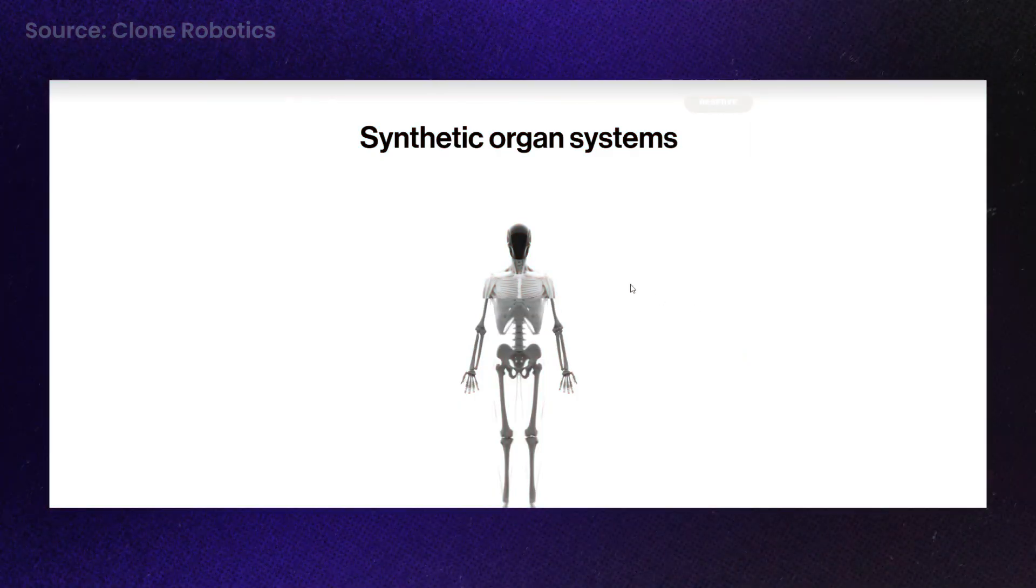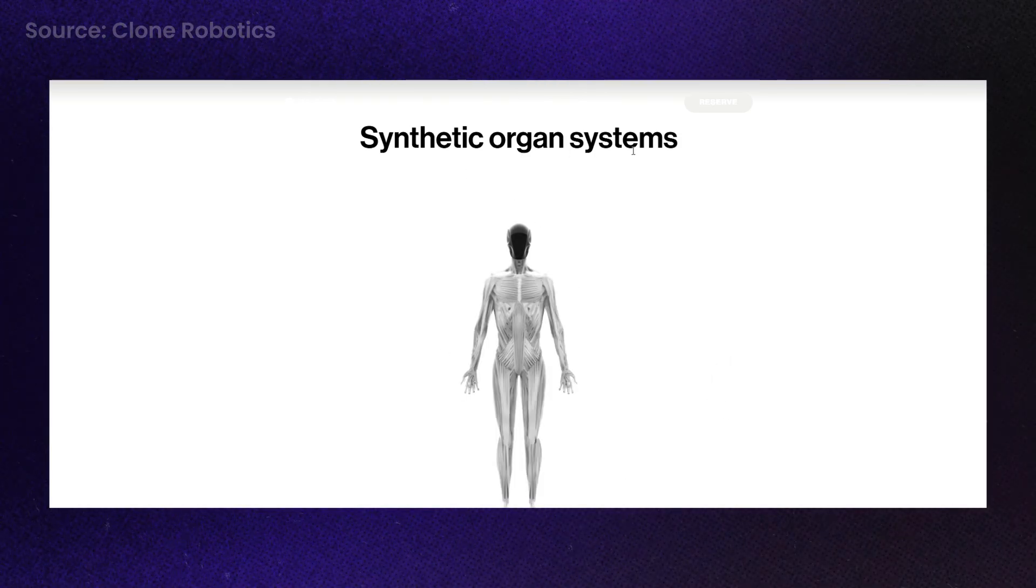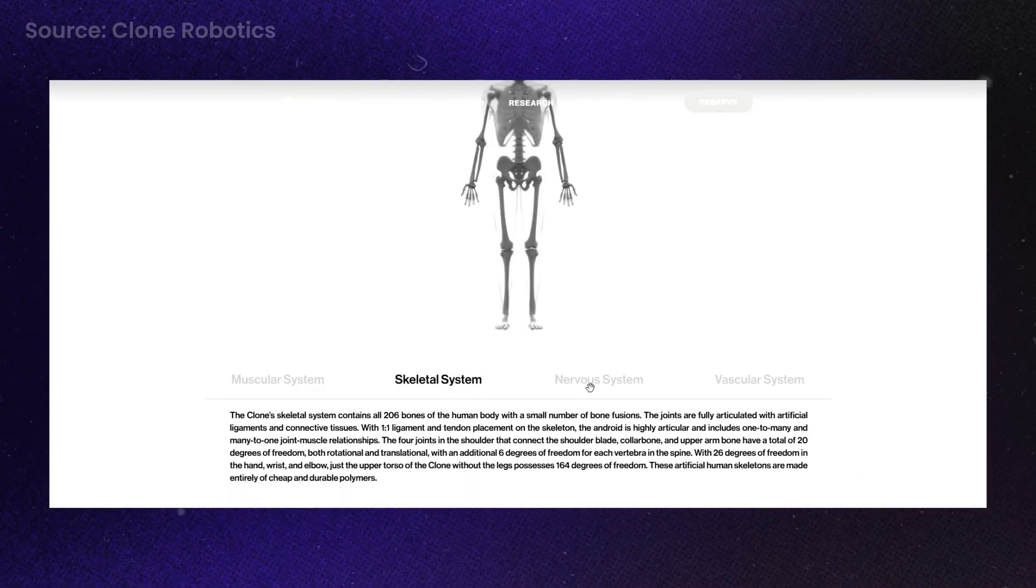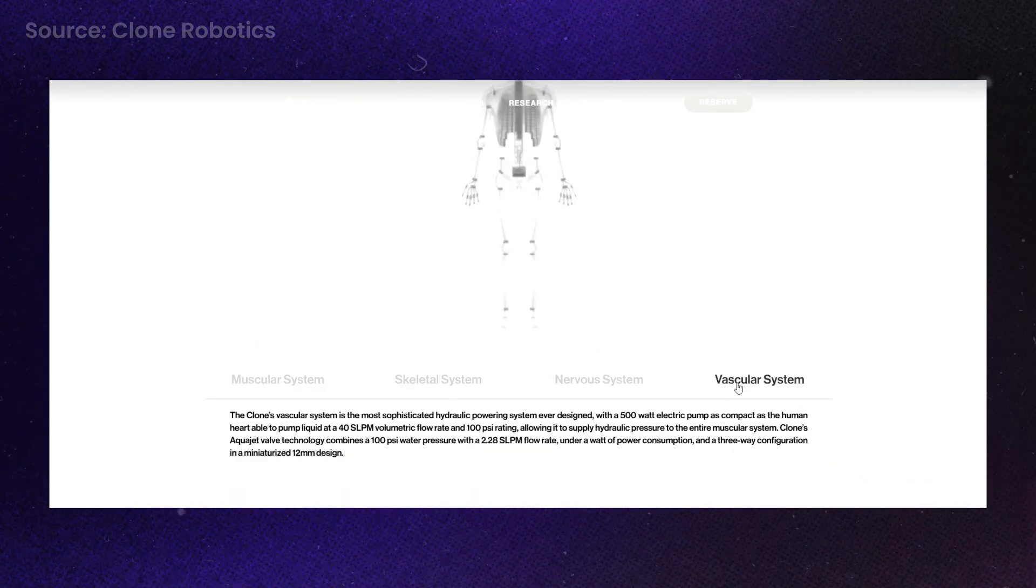So here, back on Clone's website, we can see more about their innovative synthetic organ system, which consists of four parts: a muscular, skeletal, nervous, and vascular system.